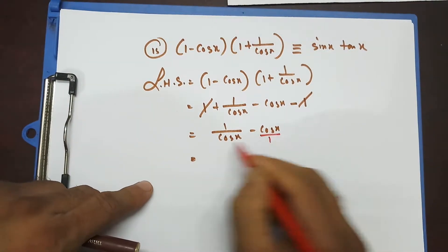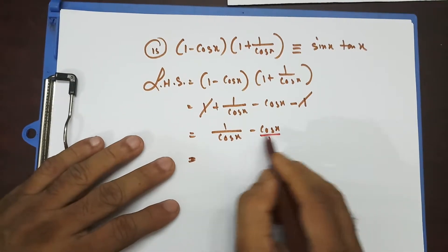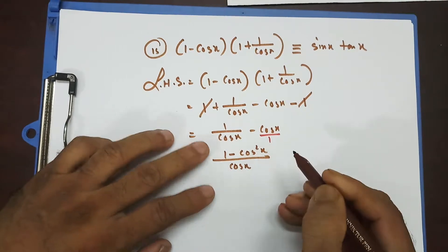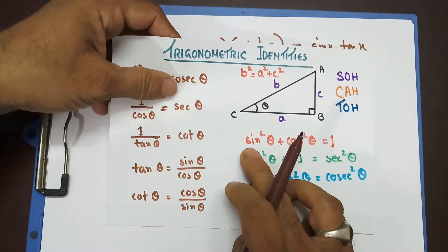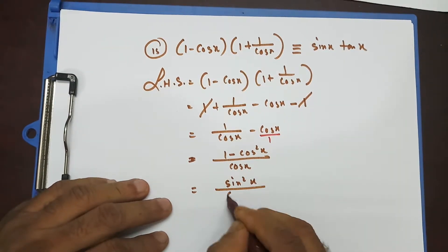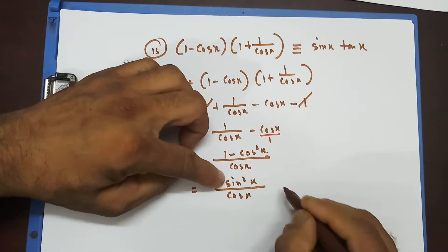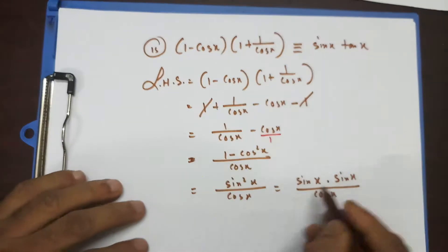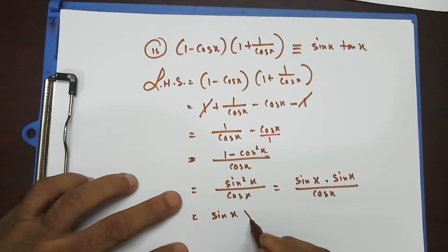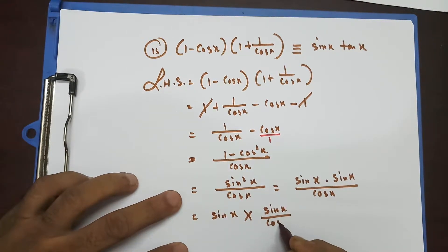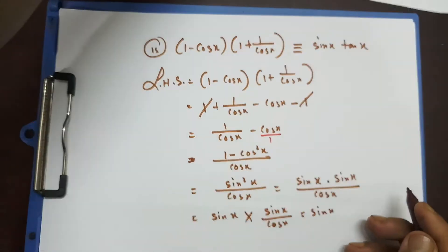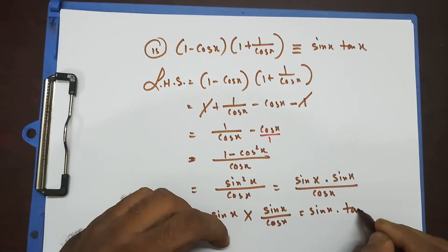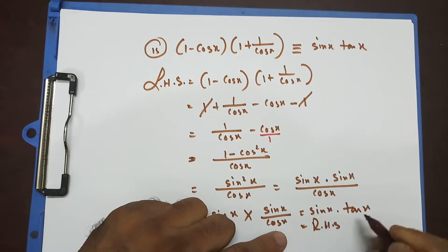I'm left with 1/cosx minus cosx. Taking cosx as the common denominator, that becomes (1 minus cos²x)/cosx. Now 1 minus cos²x can be replaced by sin²x, so that's sin²x/cosx. I can write this as sinx times (sinx/cosx), and since sinx/cosx equals tanx, this becomes sinx times tanx — which is my right hand side. Proved!